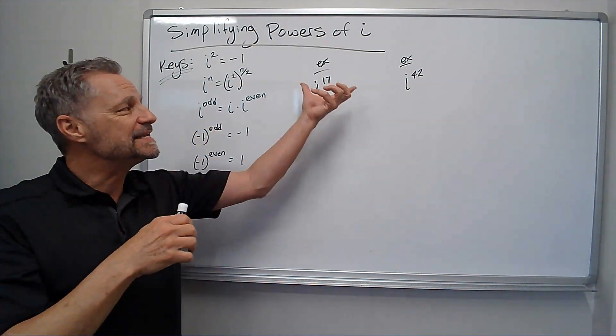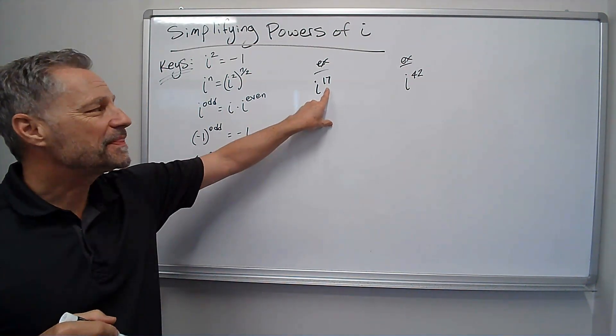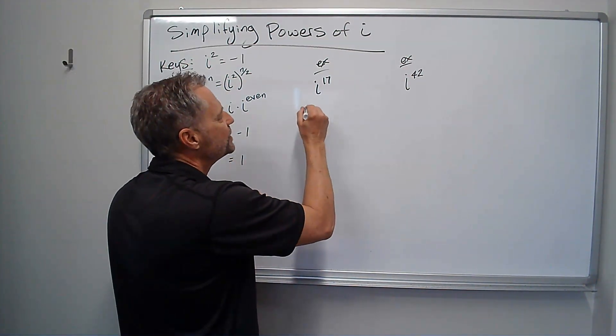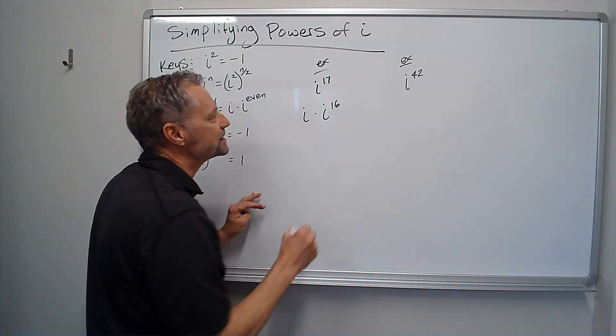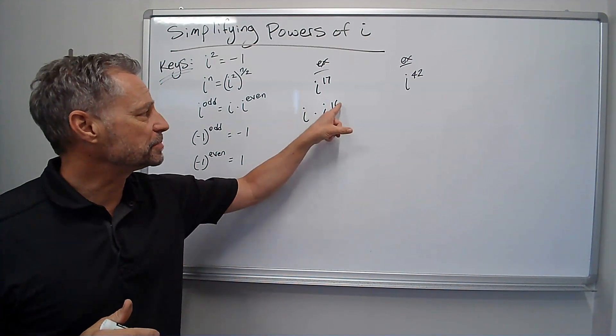Okay, I'm going to use those keys to do these two problems. So i to the 17th, I want that to be an even number, so I'm going to pull one of the i's out. So that's the same as i times i to the 16th. That would be i to the 17th, because remember when we add the exponents, 1 plus 16 is 17.